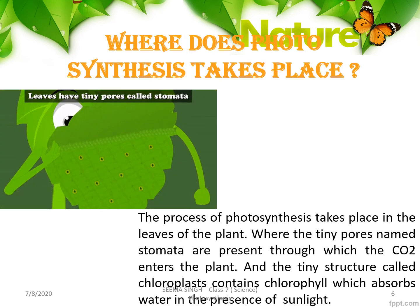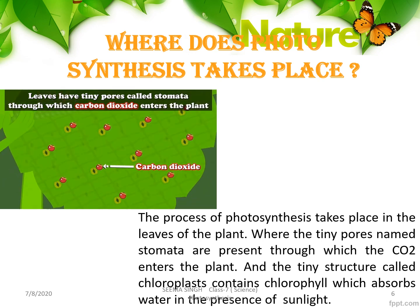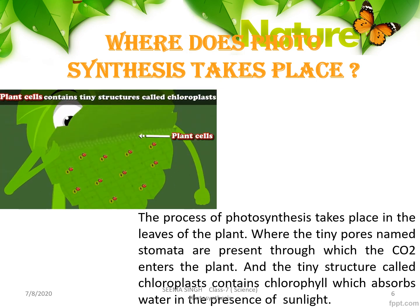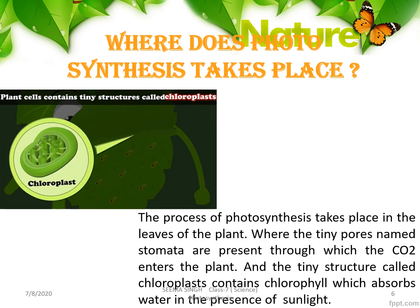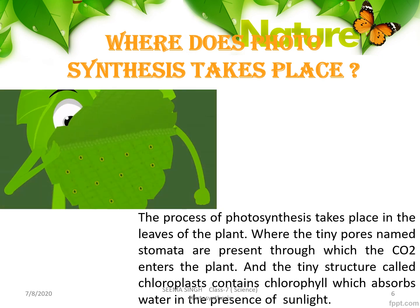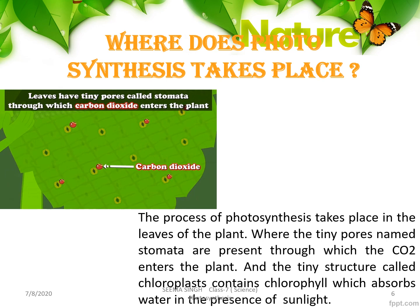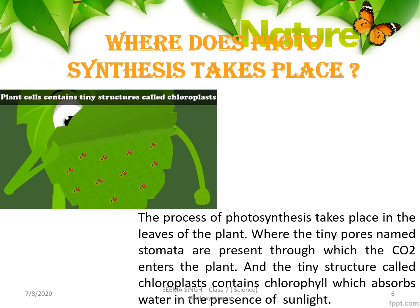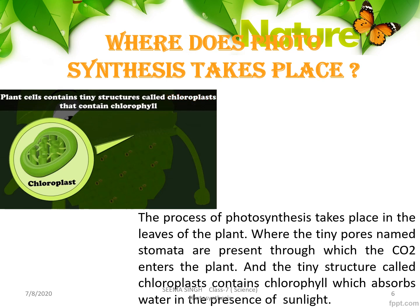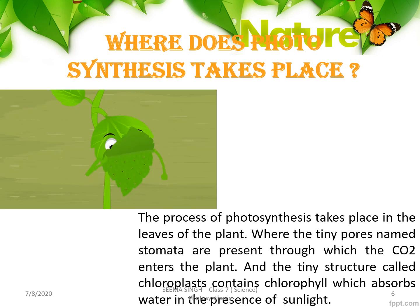We have seen what the components are, but in a plant where does photosynthesis occur? The process of photosynthesis takes place on the leaves. On the leaves there are tiny pores called stomata, through which carbon dioxide from the air is taken in by the plant. The plant cells have small tiny structures called chloroplasts, and these chloroplasts have chlorophyll — the green pigmentation — which is why leaves are green.